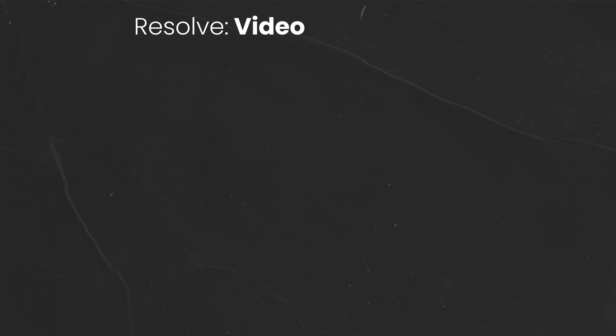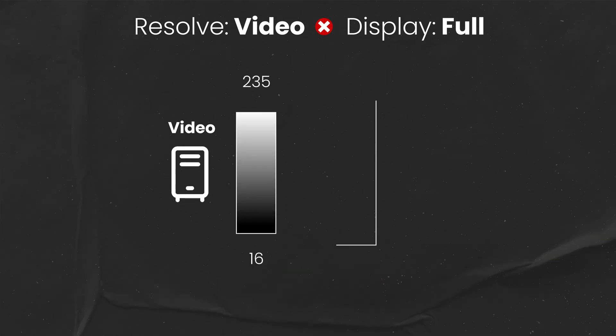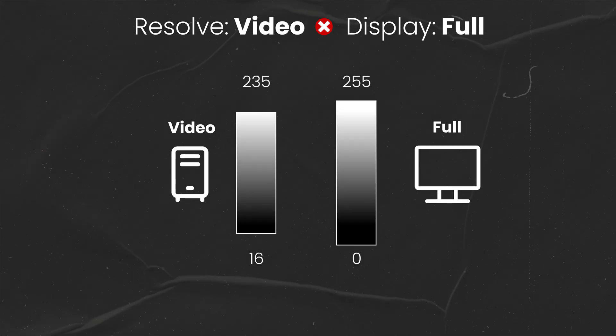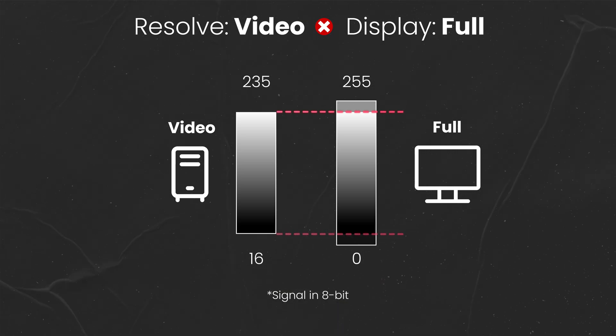Now let's look at the flip scenario where you're feeding video data levels from Resolve but your display is expecting full levels. What happens then is your display shows a compressed image with lifted blacks and reduced whites, and as a result the calibration image is going to look flat, with noticeably lifted blacks and compressed whites.